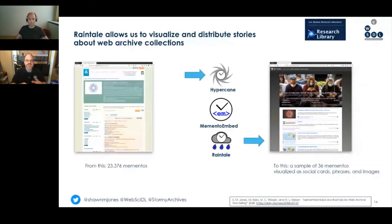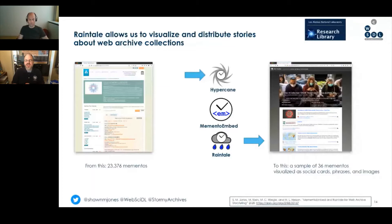This is the IIPC's COVID-19 collection. On the left, the archivist has painstakingly added metadata and provided other information so that a user could explore the collection textually. We feed the whole collection through three tools: Hypercane, Memento Embed, and RainTail. Hypercane selects exemplars — the Mementos that best describe the collection. Memento Embed then creates an individual summary for each Memento. And then RainTail ties it all together. On the right, we see people in masks, pictures of the virus, maps of the virus spreading across the world, combined with headlines, sources, dates, and all kinds of other information.